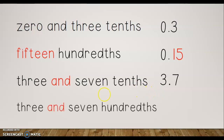Let's try one more — 'three and seven hundredths.' This looks similar to 'three and seven tenths,' but watch how we do something different. The 'and' tells me what's before it is my whole number, so I have three and then my decimal point. Then I have seven hundredths — but the seven has to be in the hundredths spot, so I have to put a zero in the tenths spot as a placeholder, and then seven goes in the hundredths place. Notice how 'three and seven tenths' looks different from 'three and seven hundredths' — the zero is in the tenths place instead.